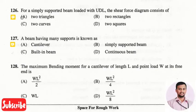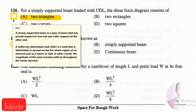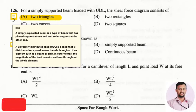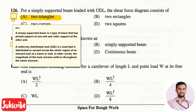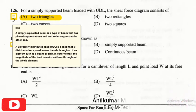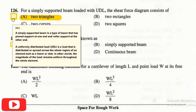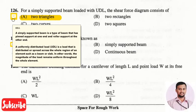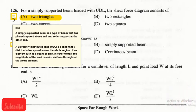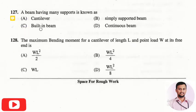The next question is: for a simply supported beam loaded with a UDL, the shear force diagram consists of? The right answer is two triangles. A simply supported beam has a pinned support at one end and a roller support at the other. A uniformly distributed load is a load distributed across the whole region of an element such as a beam or slab, where the magnitude remains uniform throughout.